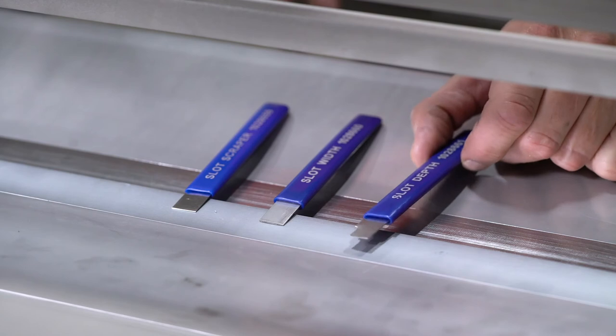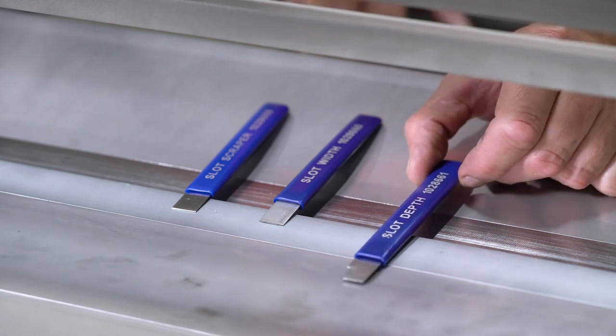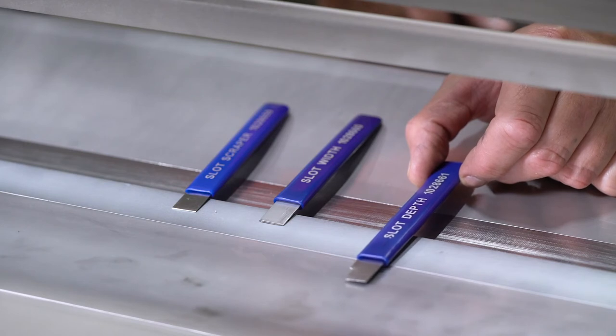Then you have the slot depth tool. The slot depth tool has a notch out of it which you can see which checks to make sure that the blade does not go too far back inside the blade guide.